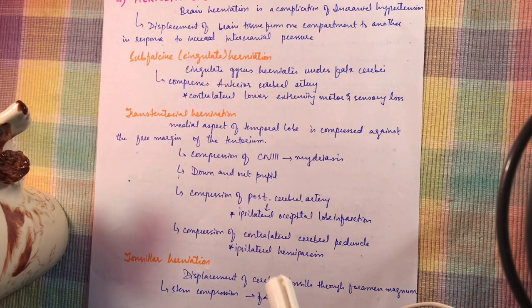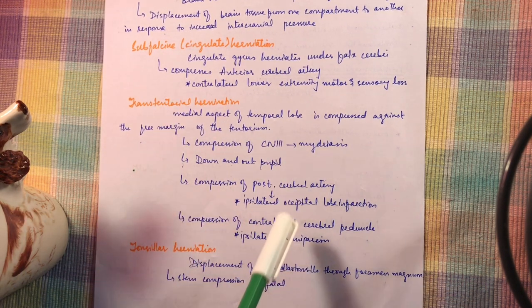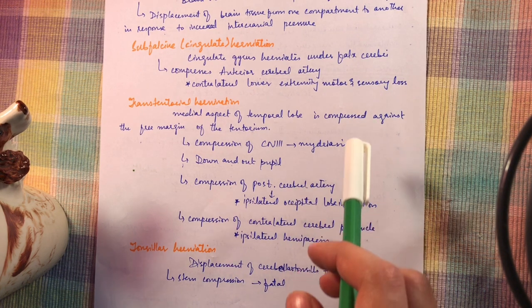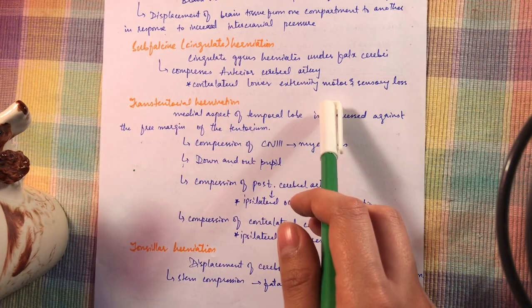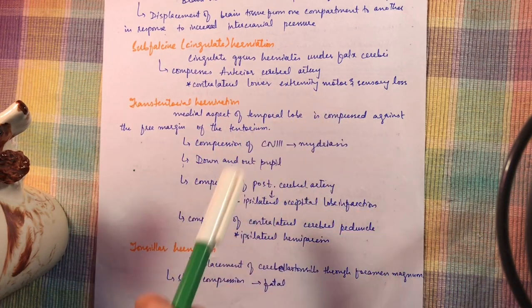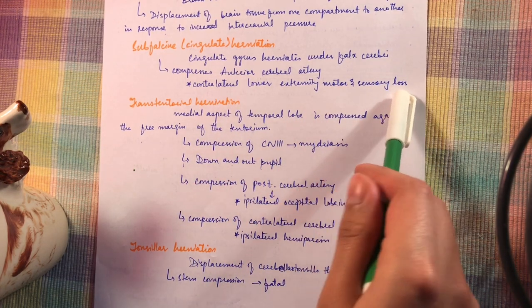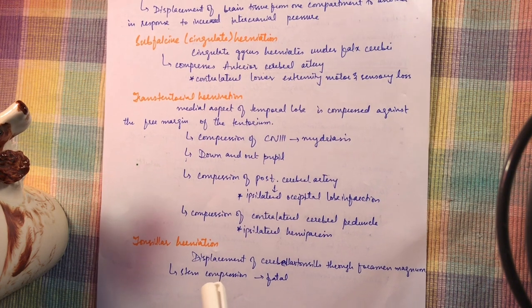There are three types of herniation. First is subfalcine herniation, also known as cingulate herniation. This occurs when the cingulate gyrus herniates under the falx cerebri. It compresses the anterior cerebral artery, and that compression leads to contralateral lower extremity motor and sensory loss.